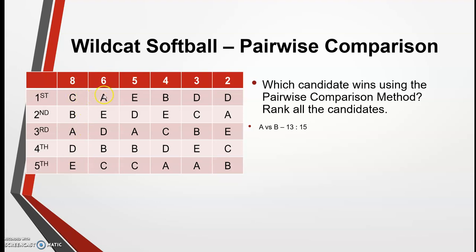A is ranked higher in column 2, so that's 6. Column 3 gives 5 more, so 11. And column 6 gives 2 more, so 13 total votes for A. B is ranked higher than A in column 1, so that's 8. B is higher in column 4, so 8 plus 4 is 12. B is higher in column 5, so 12 plus 3 is 15. B gets 15 votes total, so B is the winner of this comparison.